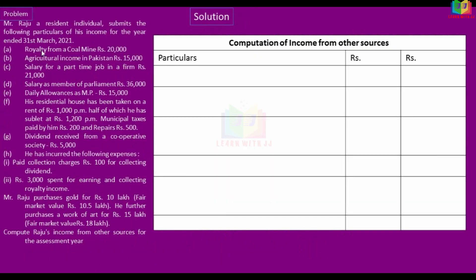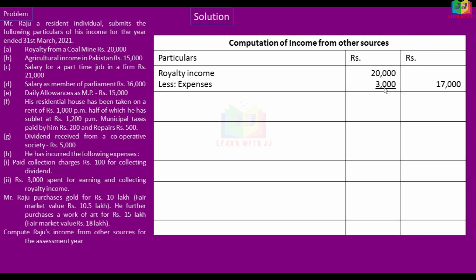We will calculate royalty income. Royalty received is Rs. 20,000, and expenses are Rs. 3,000, which we can claim. So the net royalty income is Rs. 17,000. Next, agricultural income in Pakistan — this falls under the other income classification and is taxable at Rs. 15,000.